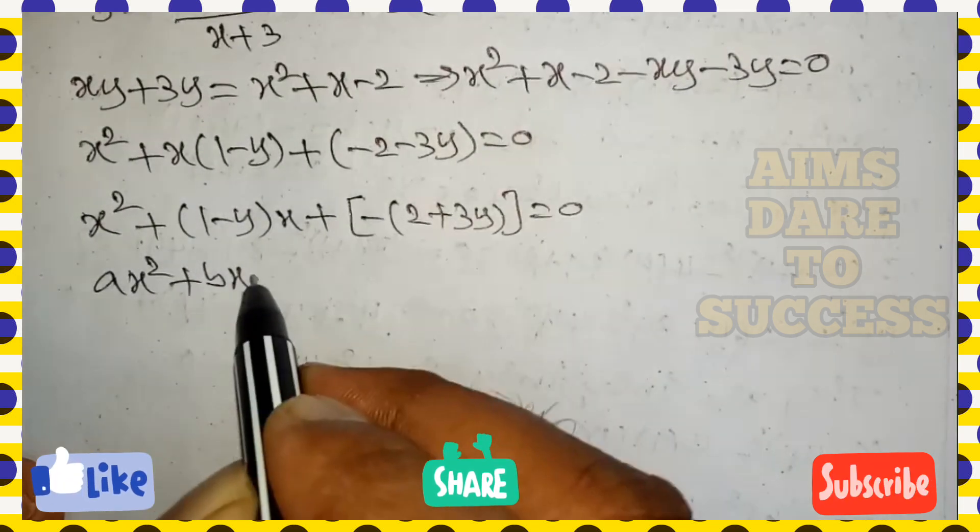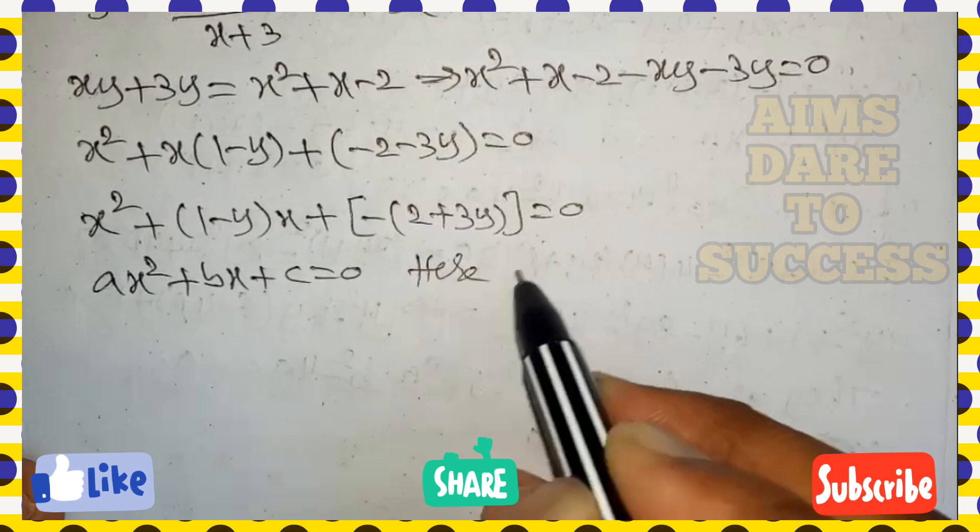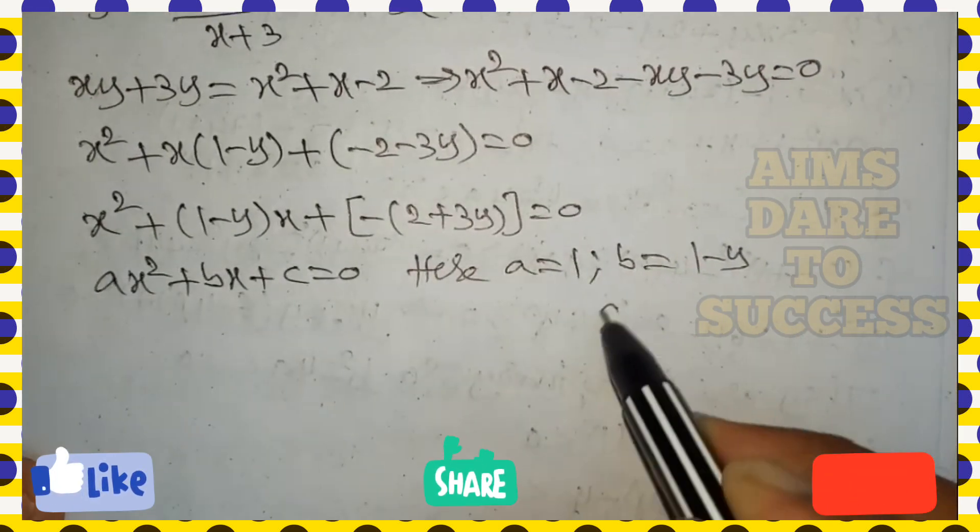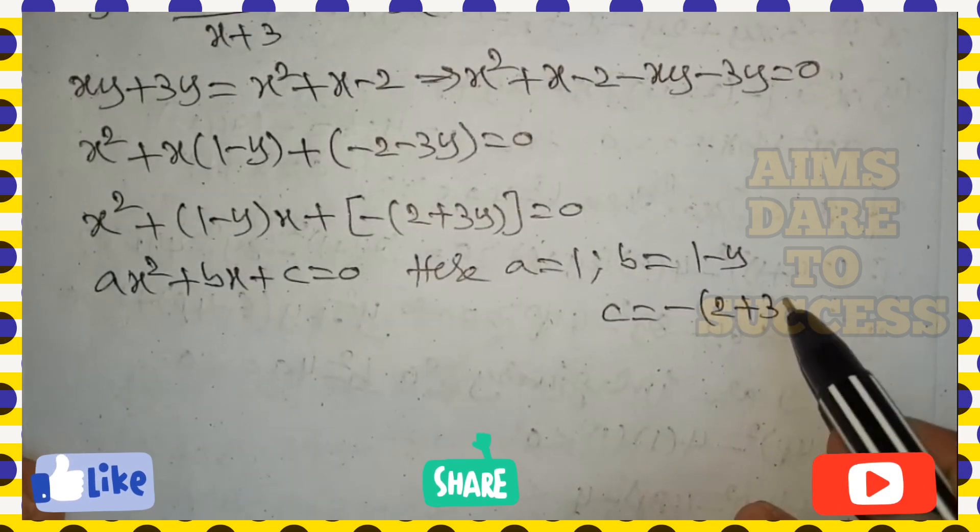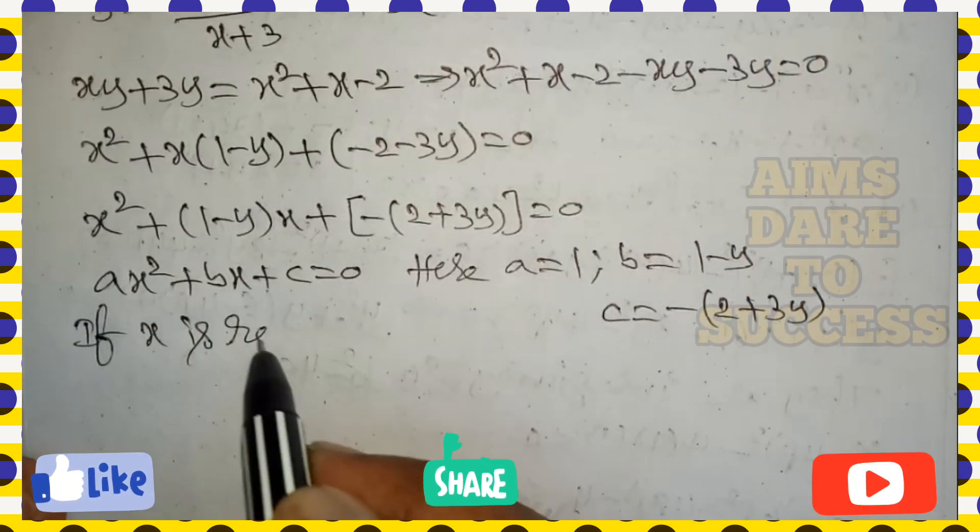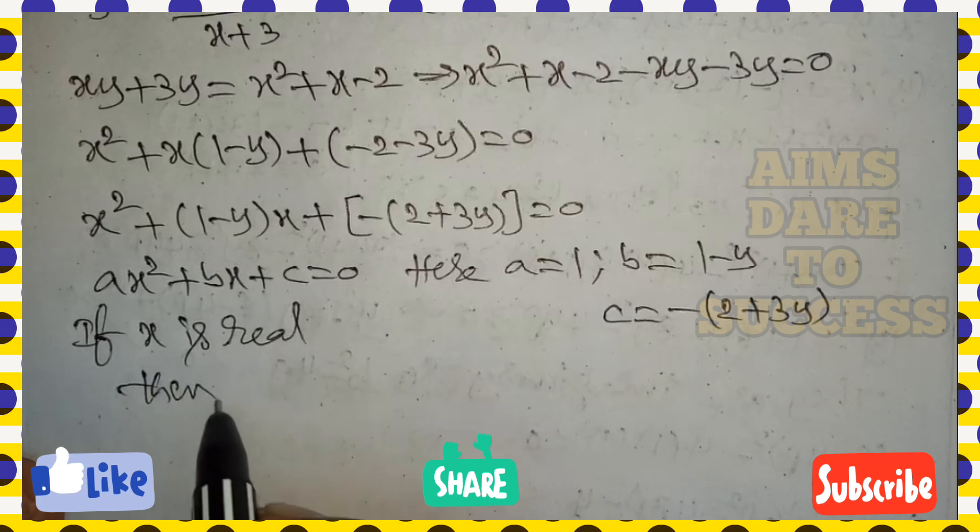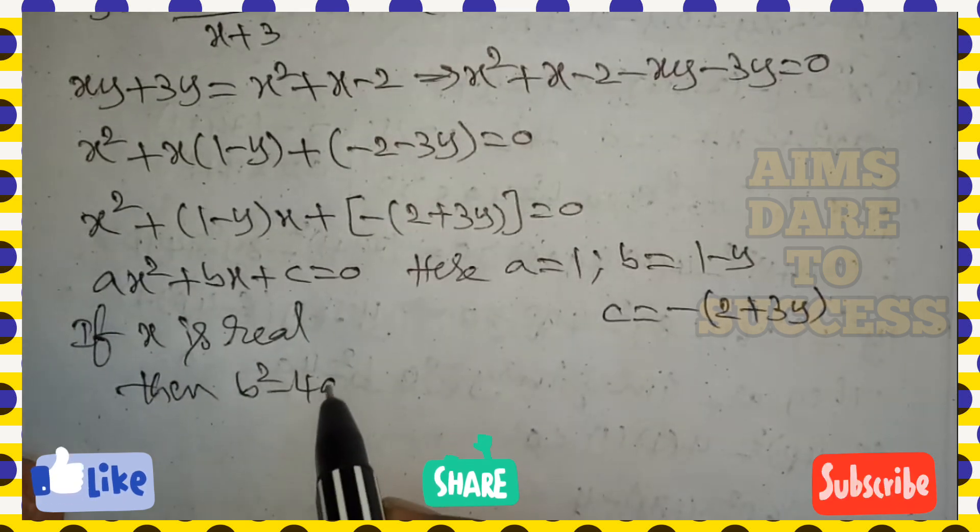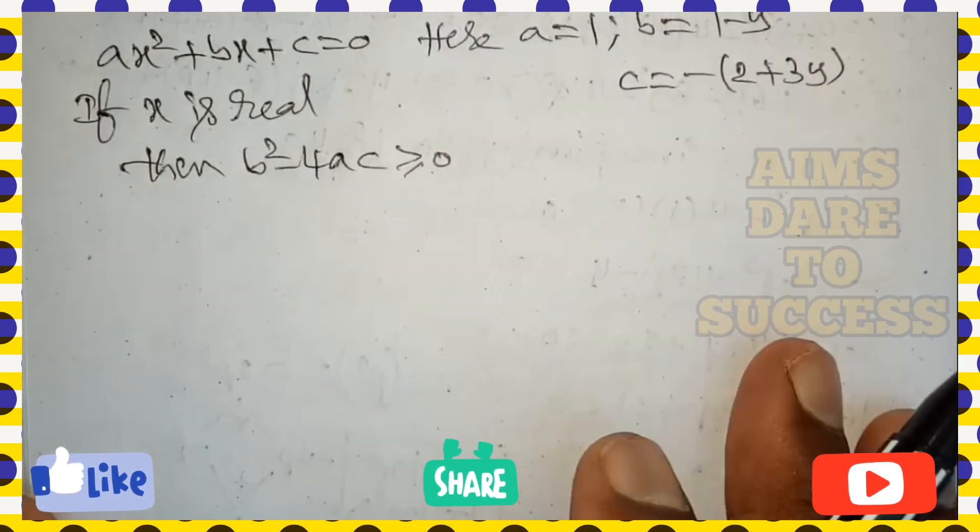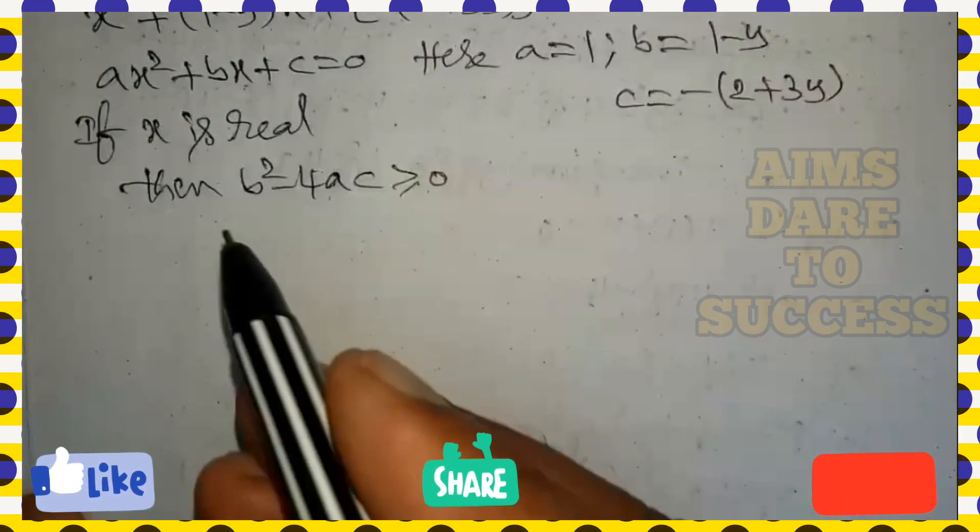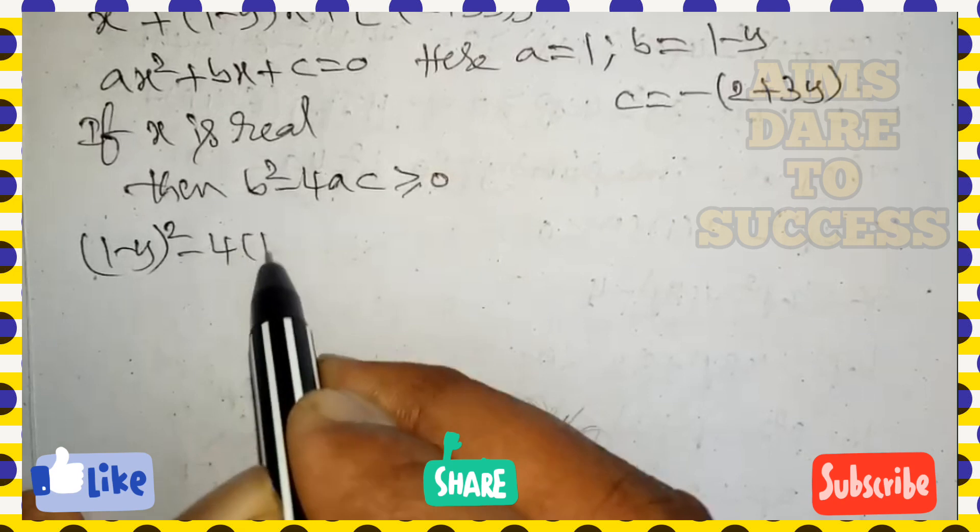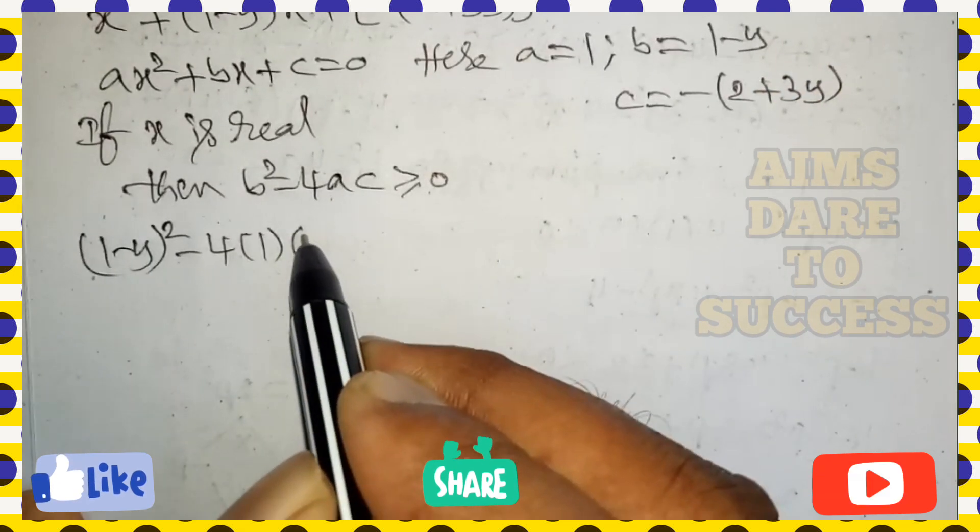This is in the form of ax square plus bx plus c equal to 0. But some a, b, c values: look at a value 1, b value 1 minus y, c value minus of 2 plus 3y. So if x is real from the question, if x is real, then the discriminant value b square minus 4ac greater than or equal to 0. a, b, c values substitute in the formula. Substitute: b value (1-y) whole square minus 4 into a value 1, c value minus of 2 plus 3y is greater than or equal to 0.